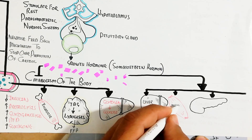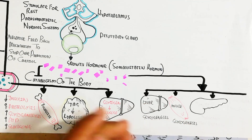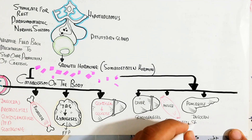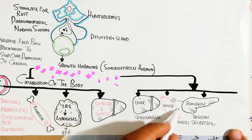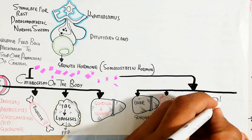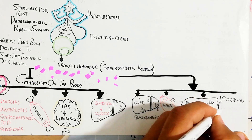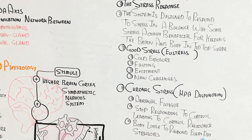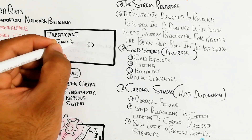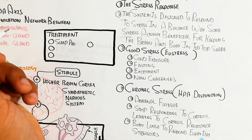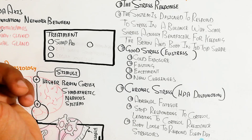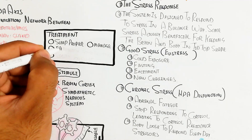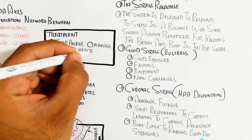Growth hormone inhibits this catabolism and instead triggers glycogenesis and gluconeogenesis, as well as insulin secretion. Glucagon is suppressed while insulin increases when we eat. So growth hormone opposes the catabolic effects of cortisol by promoting anabolic pathways.